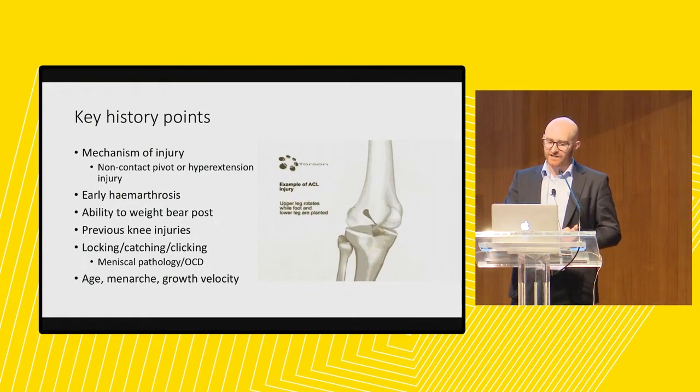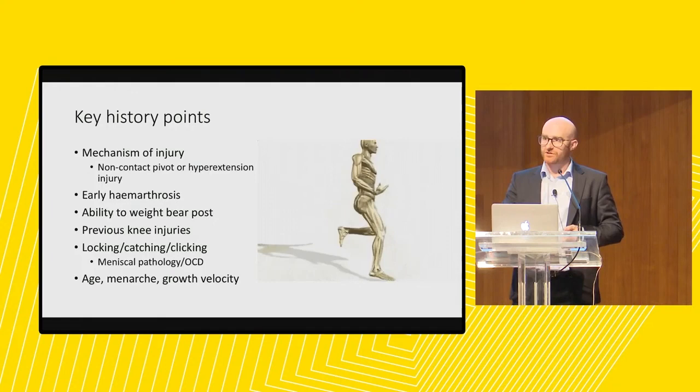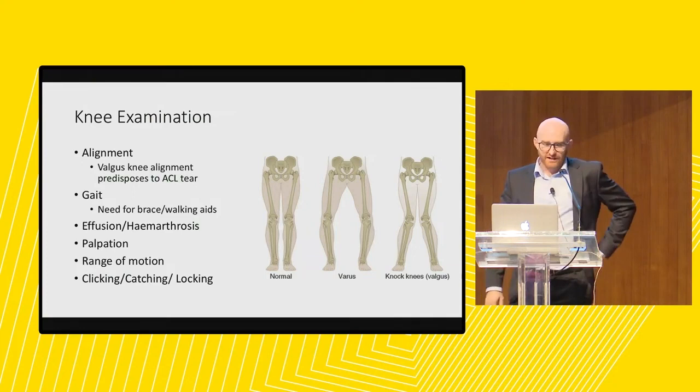Particularly in kids, the important things to note with your assessment are their current age, for girls what their age of menarche was, and try to make an estimate of their peak growth velocity. The easy questions for that are: when was the last time you had to buy a new pair of sports shoes because you grew out of them? If it's every six months, they're entering their teenage pubertal growth spurt.